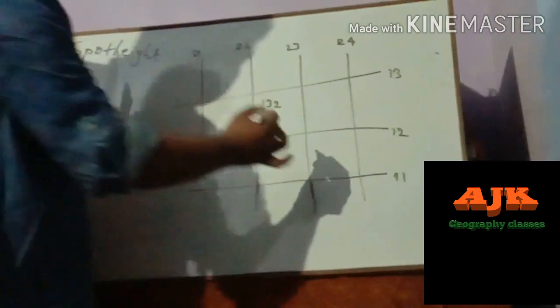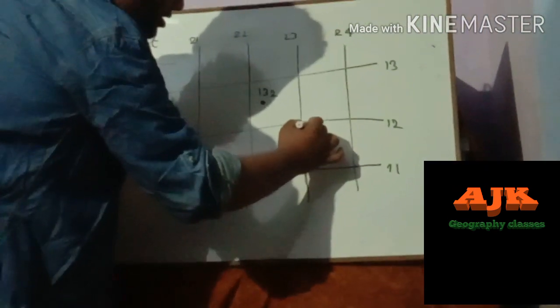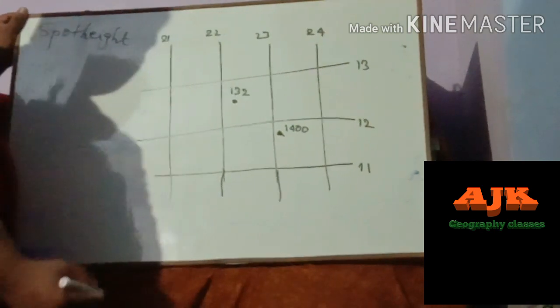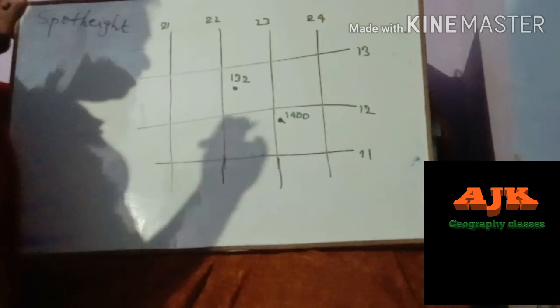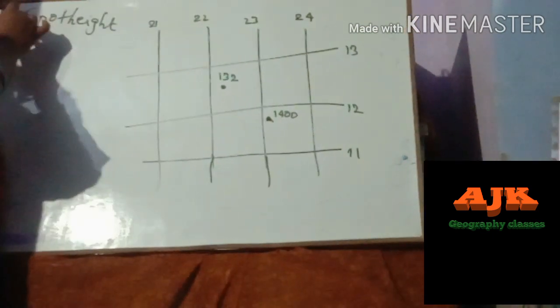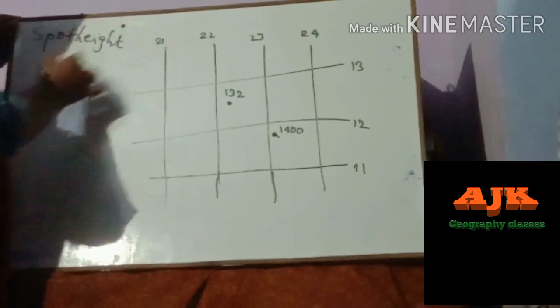Similarly, another kind of height marking is a small triangular shape with a three-digit or four-digit number written next to it — for example, 1400. This is known as a triangulation point, or triangulated height. It is denoted by a triangle with a digit, and it represents triangulated height.